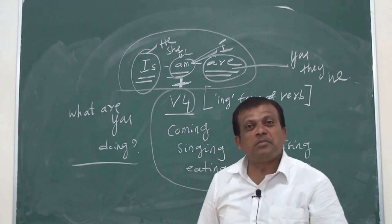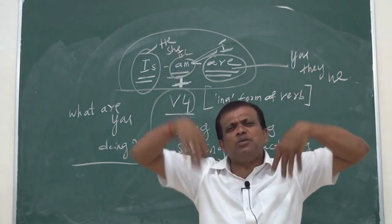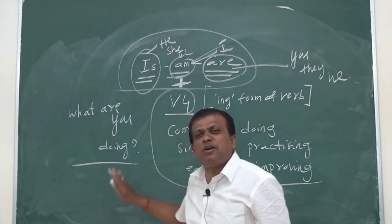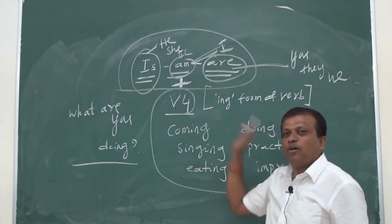This question is asked by someone to you. What are you doing? What is your job? You have plenty of opportunities. Imagine yourself doing something and answer one hundred, two hundred, or three hundred times, and you will be perfect in 'is,' 'am,' and 'are' with verb four.